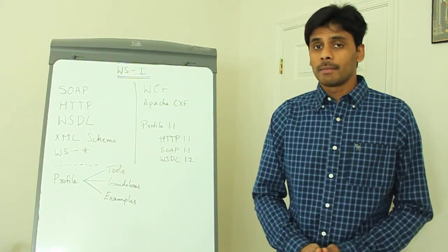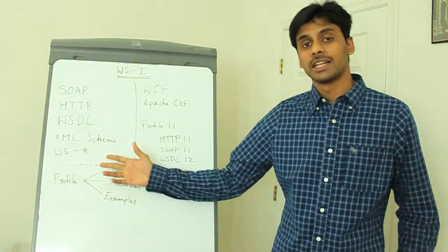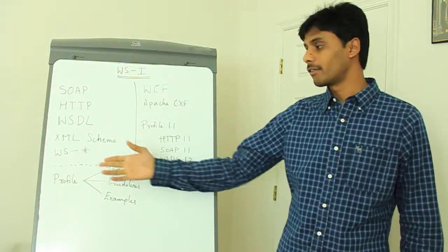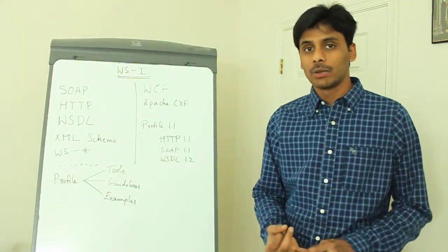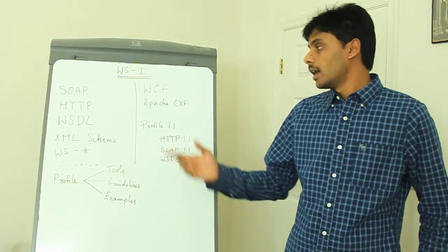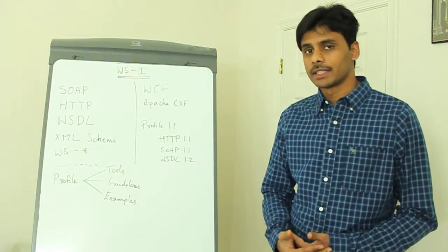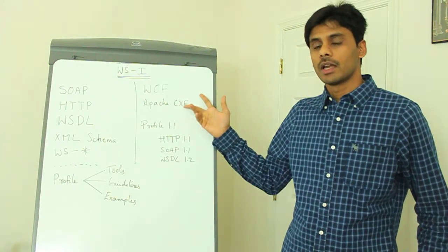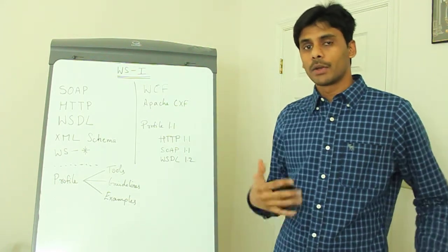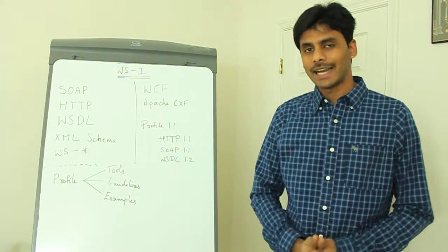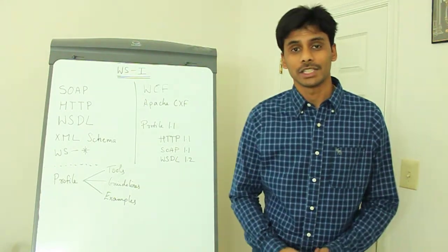The interoperability problem gets exponentially bigger as we consider all the web services standards and their versions. WCF could implement different versions of standards like WS-Addressing, WS-Security, etc., and Apache CXF might implement different versions of those same standards, which will cause the interoperability problem to grow in size with every combination. That's exactly where the WS Interoperability organization steps in.